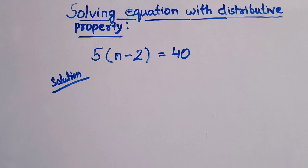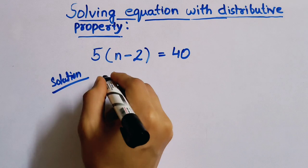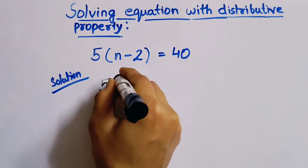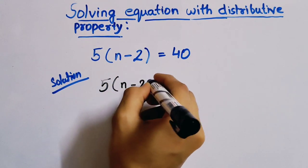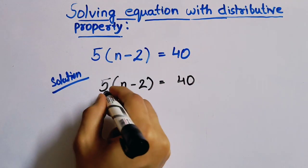Hello everyone, so today we'll solve a very simple equation with distributive property. It's a very simple equation. What is given? Given is 5 bracket n minus 2 equals to 40. What will we do first?